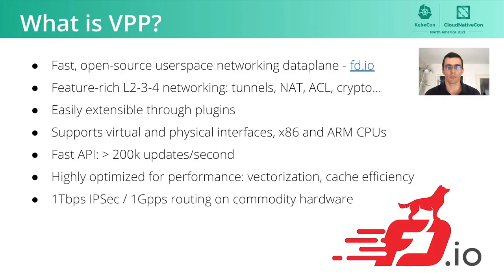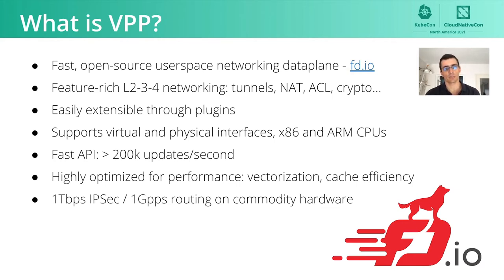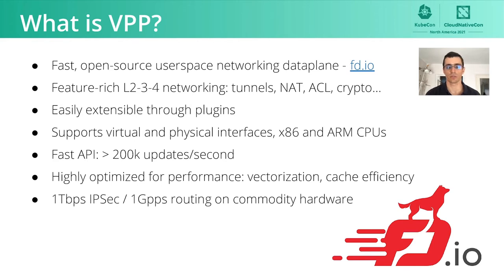Before we dive into the data plane, you may be wondering what VPP is. In short, it's a user-space network data plane — a software router that's highly optimized both for packet processing and at the API level. It supports all kinds of hardware and is easily extensible through plugins, which is something we used in the Calico integration. It leverages vectorization to maximize CPU instruction and data cache efficiency, leading to impressive performance numbers. These numbers were obtained on standard two-socket Ice Lake servers: doing IPSec we can get one terabit per second of encryption, and doing simple forwarding we can reach one billion packets per second.